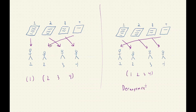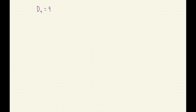And if we want to count the number of derangements, we denote that as D sub n. So, what's so interesting about derangements? Well, the total number of derangements on four-element sets, D sub 4, is equal to 9 out of the 4 factorial, or 24 possible permutations. So, 9 out of 24, or 37.5% of these permutations are derangements.